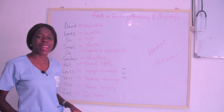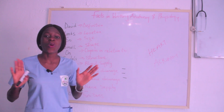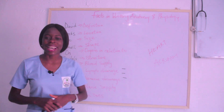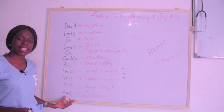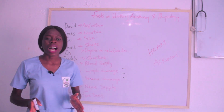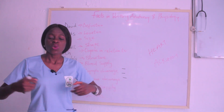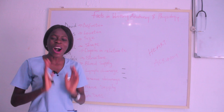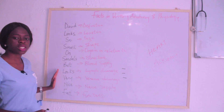Then N stands for Nerve Supply. When asked about nerve supply, what comes to mind is the sympathetic and parasympathetic nerve supply to the heart. Then the last letter F stands for Function — the function of the heart is to pump blood into circulation, to ensure that the body gets full blood and oxygen. You can see I've successfully described the heart using this acronym.